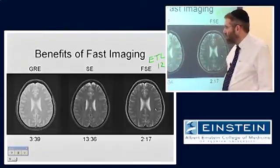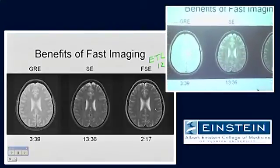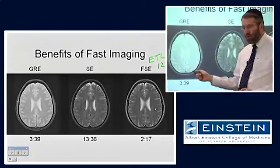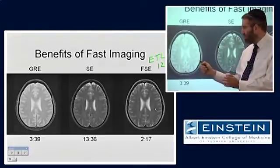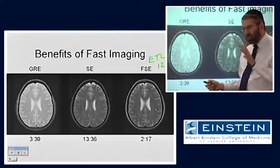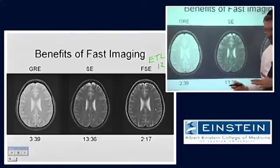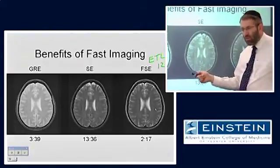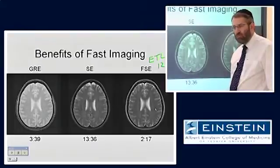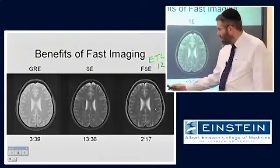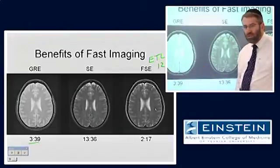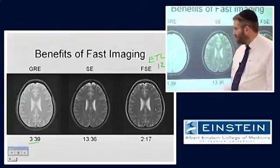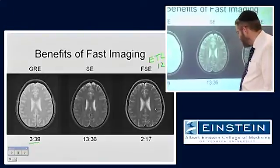The gradient echo image requires no spin-echo and is done with a short TR. Even though it's T2-star weighted, it uses a narrow flip angle to minimize the T1 contrast that would otherwise be present due to that short TR. So in a relatively short period of time we can generate this image, where the contrast reflects T2-star rather than T2.